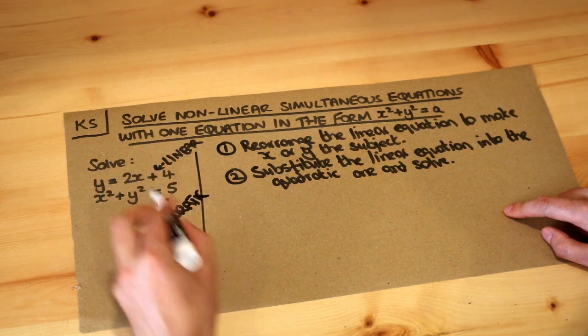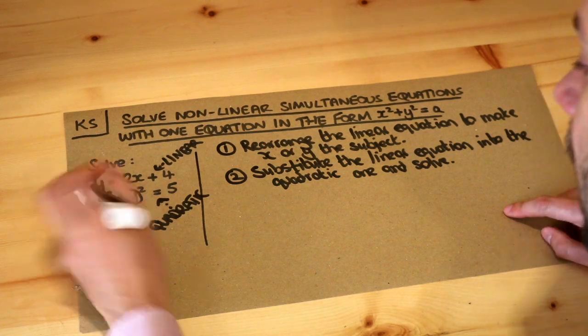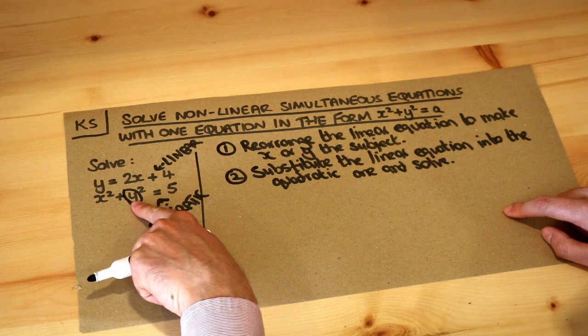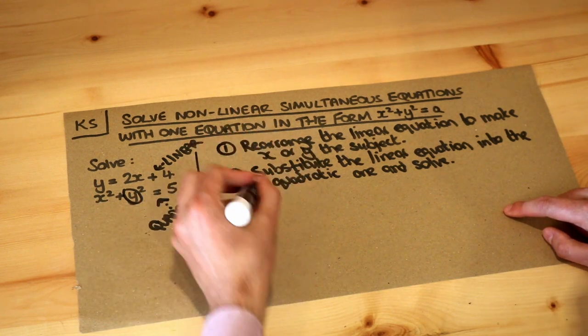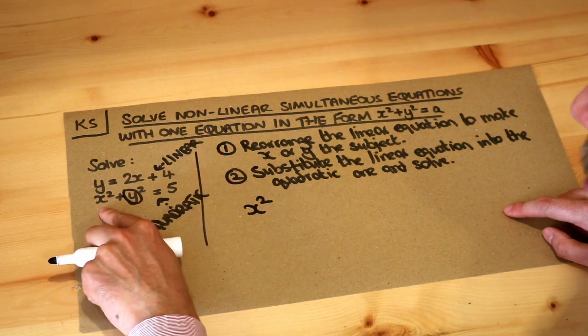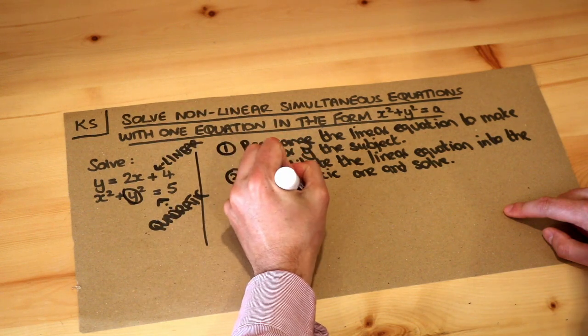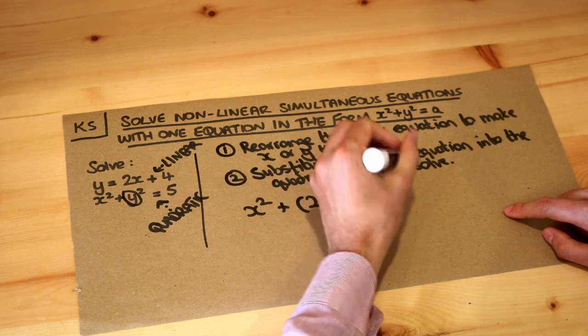Think about it: if y is equal to 2x plus 4, that means I can replace this y here with 2x plus 4. We know that y is 2x plus 4, so I can replace that y in the quadratic equation. Let's do that. We've got x squared plus, we replace the y with 2x plus 4 but we need to put in brackets because we're squaring the whole thing, and then equal to 5.